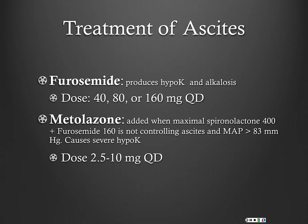I encourage you all to read the AASLD guidelines as well as the EASL — the European Association for the Study of Liver Disease. They both have guidelines on ascites and cirrhosis and are both very good. There are some subtle differences — the Europeans don't use Lasix initially and just start with aldactone.